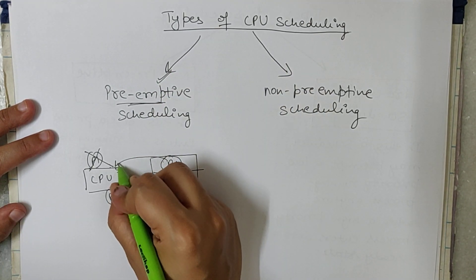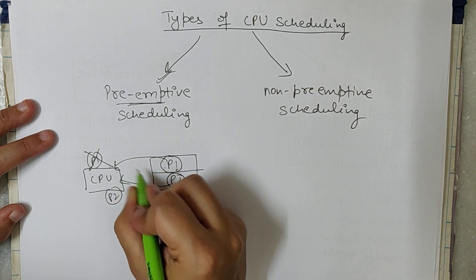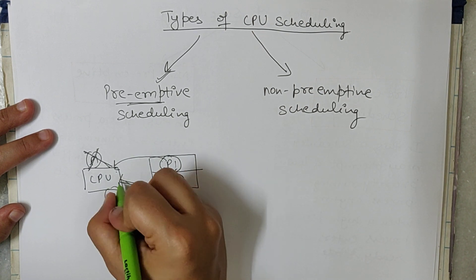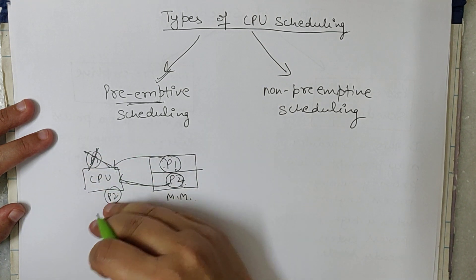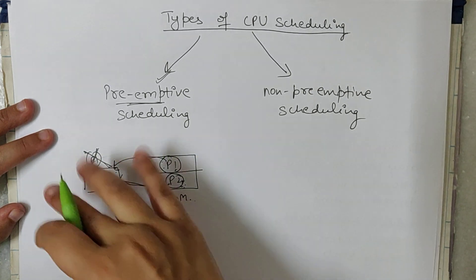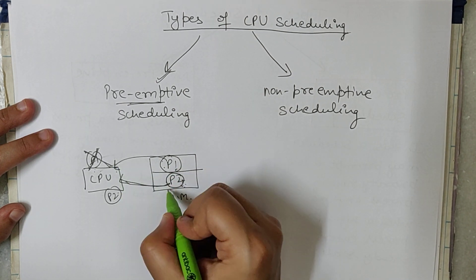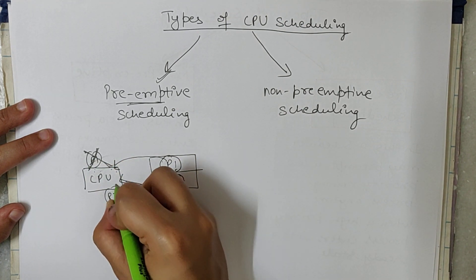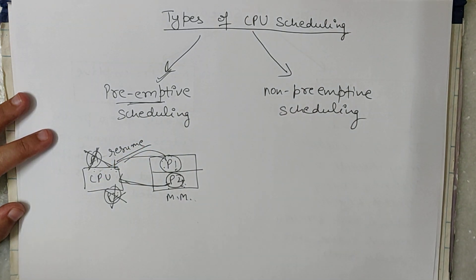If one process is already accessing the CPU and another process arrives with higher priority, that second process — P2 — will get the CPU. P2 preempts P1 and removes it from the CPU. When P2 finishes execution, P1 will resume its execution from where it left off.